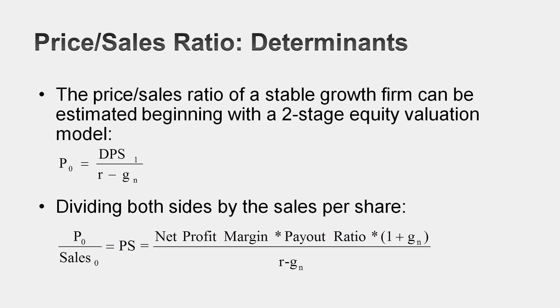Why do some companies trade at 10% of revenues and others at 5 times revenues? I'm going to use the same technique we used with price-to-earnings and price-to-book ratios. The price-to-sales ratio is a quasi-equity multiple — the numerator is an equity value — so I'll go back to a stable growth dividend discount model, divide both sides of the equation by revenues, and end up with an equation for the price-to-sales ratio for a stable growth dividend-paying firm as a function of four variables.